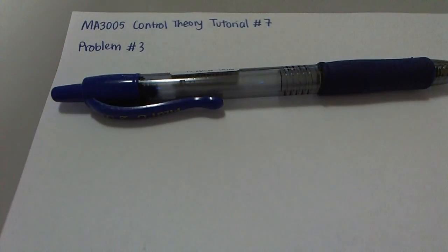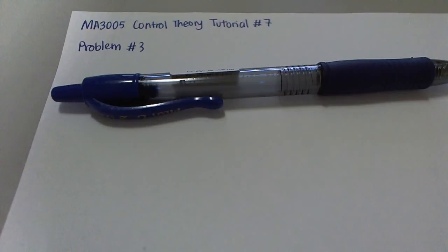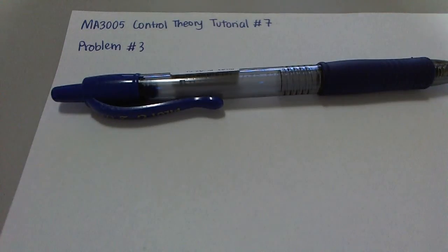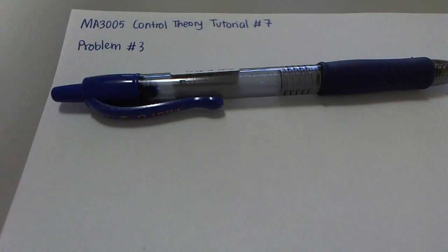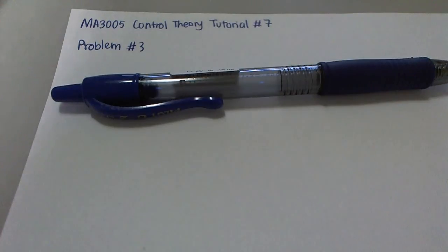Hi everyone, my name is Astini. In the previous video, I covered problem 2 of tutorial 7 in the class MA3005 Control Theory at the Anion Technological University. In this problem, I'm going to cover the last problem, problem 3, which is actually not much of a root-locus problem, but just for completeness I'm going to give a very brief answer on the root-locus plot of this problem.